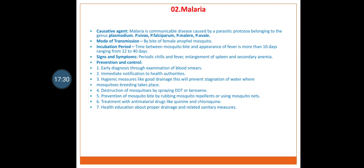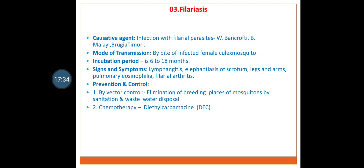The third arthropod-borne disease is filariasis. Causative agent: infection with filarial parasites such as W. bancrofti, B. malayi, etc. Mode of transmission: by bite of infected female Culex mosquito. Incubation period is 6 to 18 months. Signs and symptoms: lymphangitis, elephantiasis of scrotum, legs and arms, filariasis, filarial arthritis, etc. Prevention and control: by vector control and by chemotherapy.